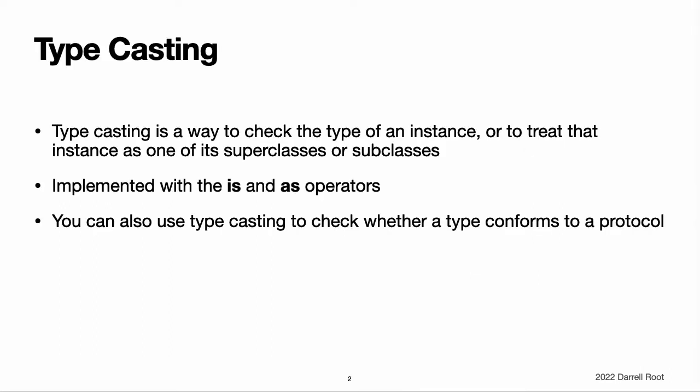Typecasting is a way to check the type of an instance or to treat that instance as a different superclass or subclass from somewhere else in its own class hierarchy. Typecasting in Swift is implemented with the IS and AS operators, which provide a simple and expressive way to check the type of a value or cast a value to a different type. You can also use typecasting to check whether a type conforms to a protocol, as described in Checking for Protocol Conformance.